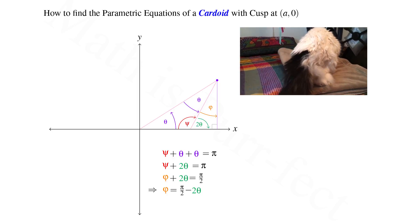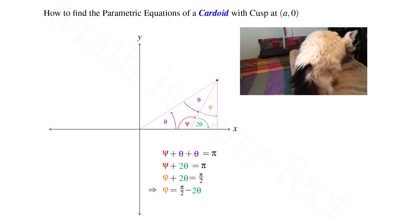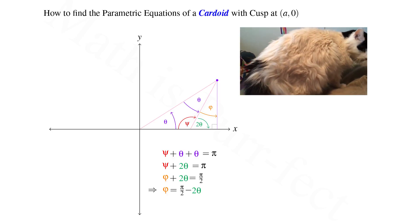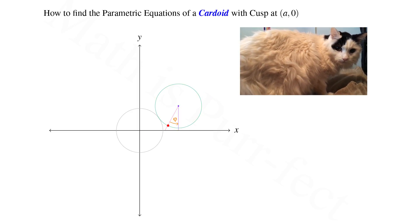Or more precisely, phi is equal to pi over 2 minus 2 theta. Now that we have a value for phi in terms of theta, let's zoom back out to continue our analysis.